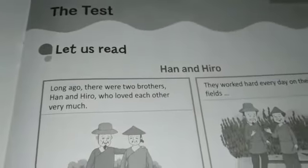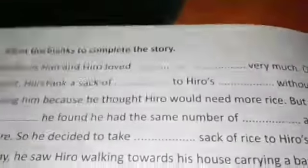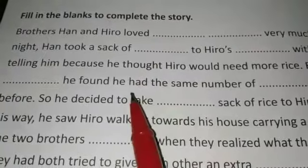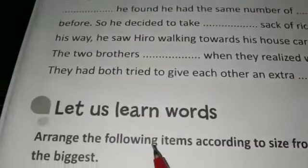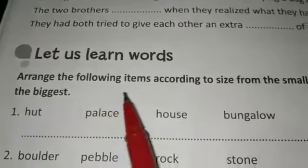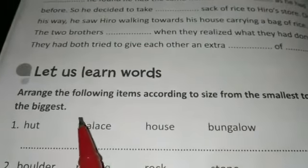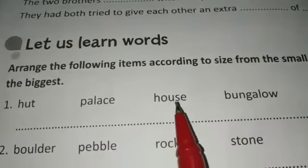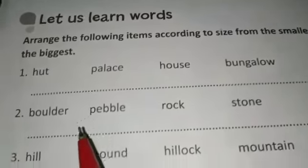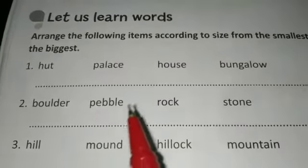In Worksheet Three, a story is given — read the story and answer the questions at the end. Fill in the blanks to complete the story; you can only answer after reading the chapter. Now let's learn words — arrange the following items according to size from smallest to biggest. The words given are: hut, palace, house, and bungalow. The smallest is hut, then house, then bungalow, and the largest is palace. Find out the order like that.